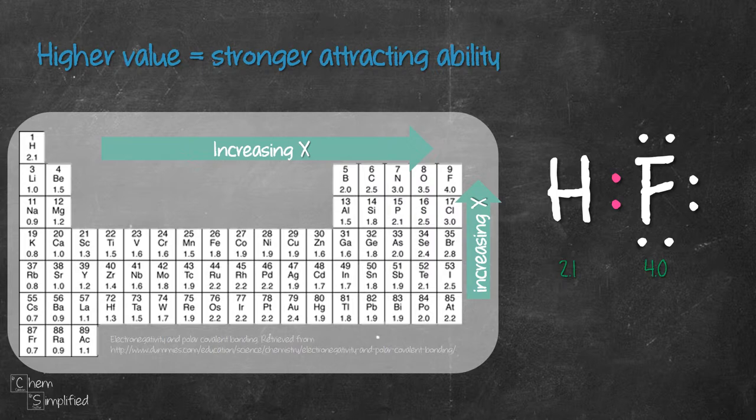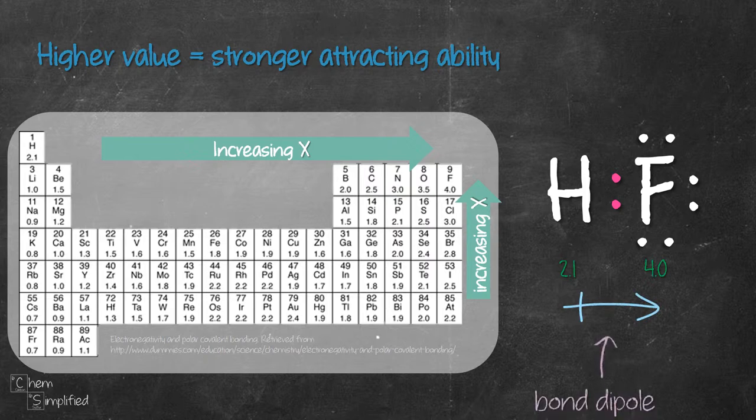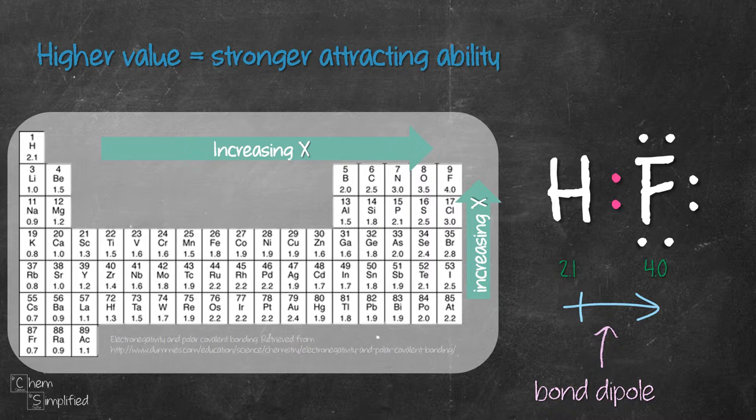Since F will do a better job in attracting the pink electrons, they will then tend to move towards fluorine like this. That arrow is called the bond dipole. It shows where the electrons are attracted to. Notice that there is a difference between bond dipole and a regular arrow.